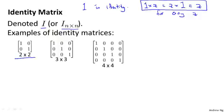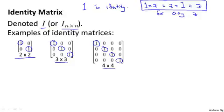Here's the 2 by 2 identity matrix, here's the 3 by 3 identity matrix, and here's the 4 by 4 identity matrix. The identity matrix has the property that it has 1s along the diagonals and 0s everywhere else. The 1 by 1 identity matrix is just the number 1 — not a very interesting identity matrix.